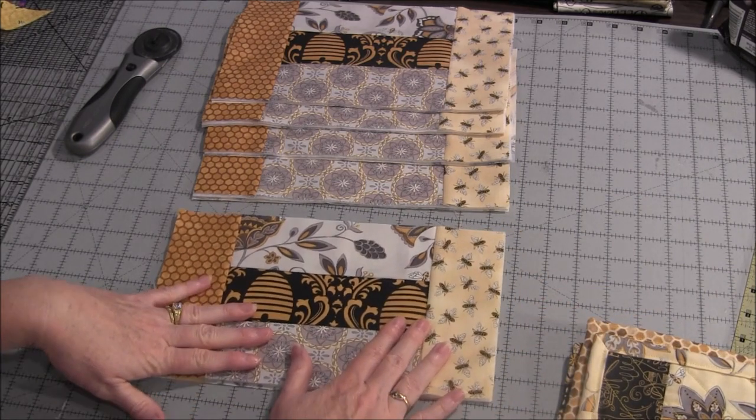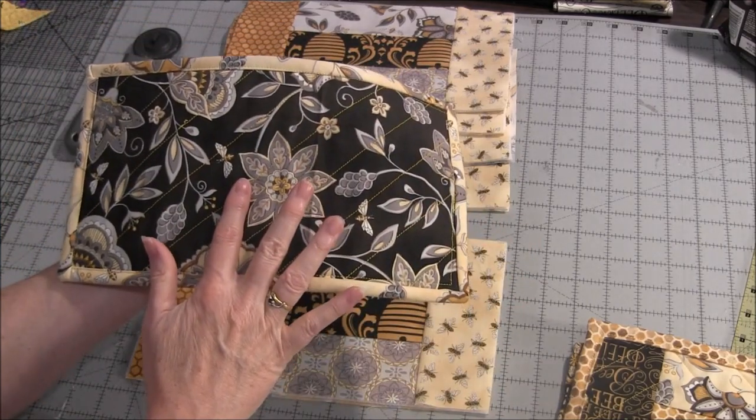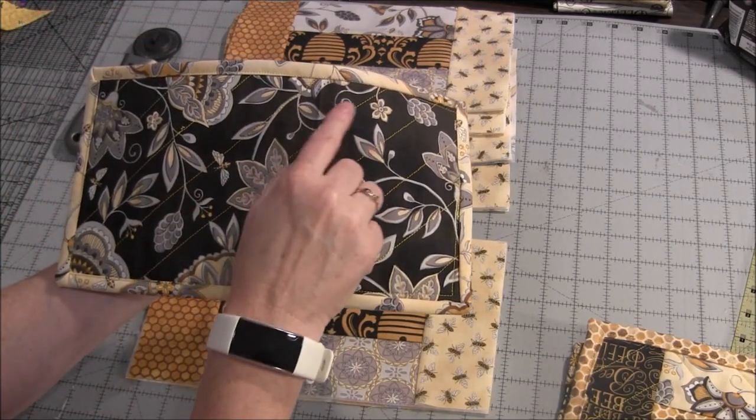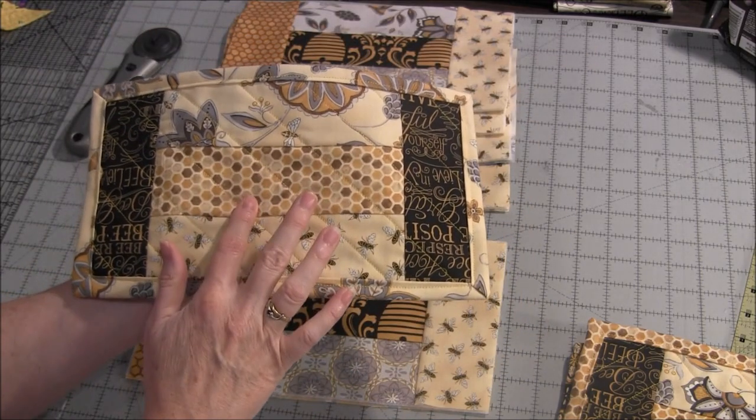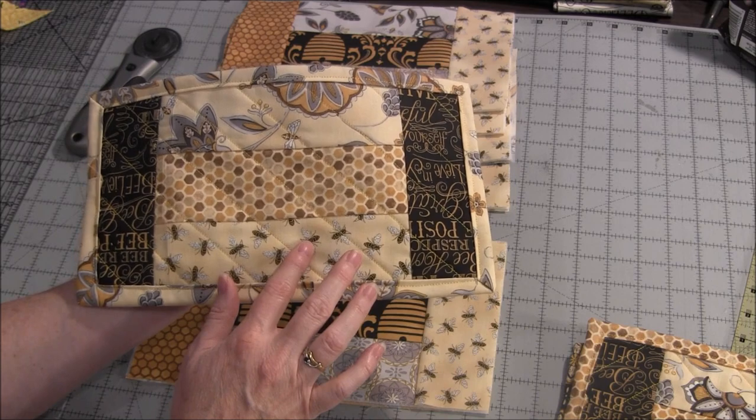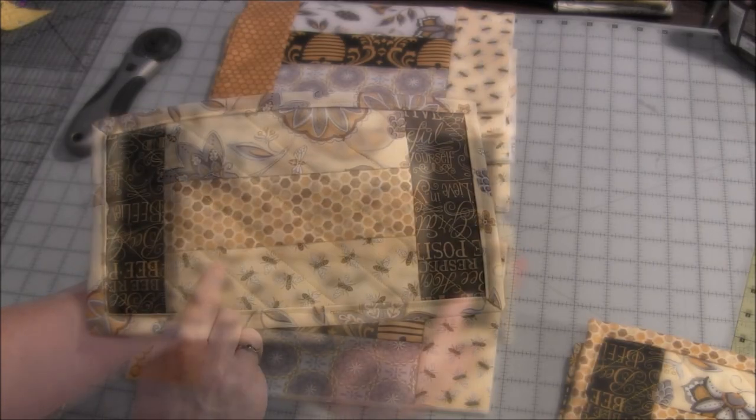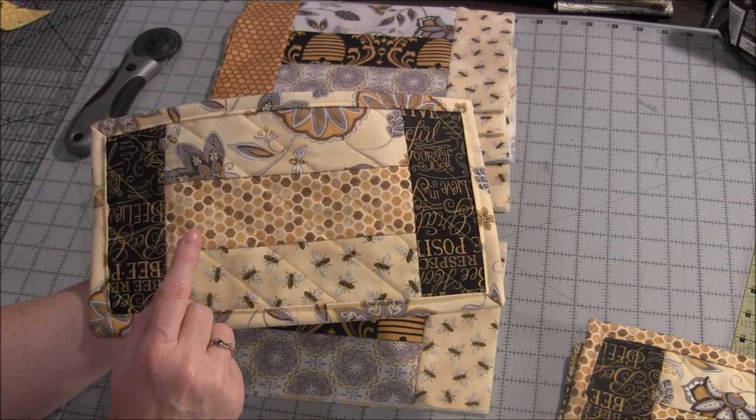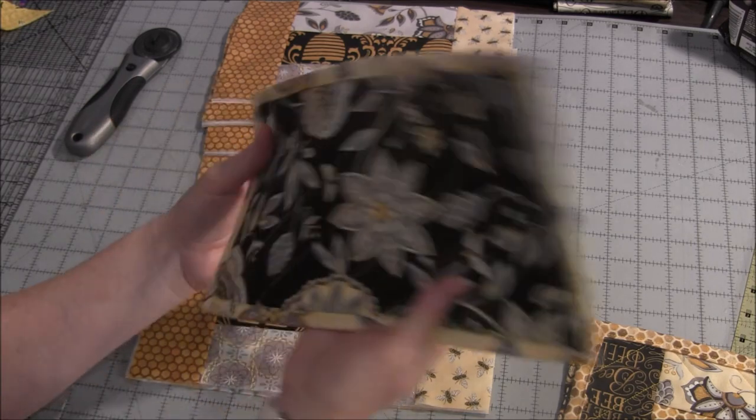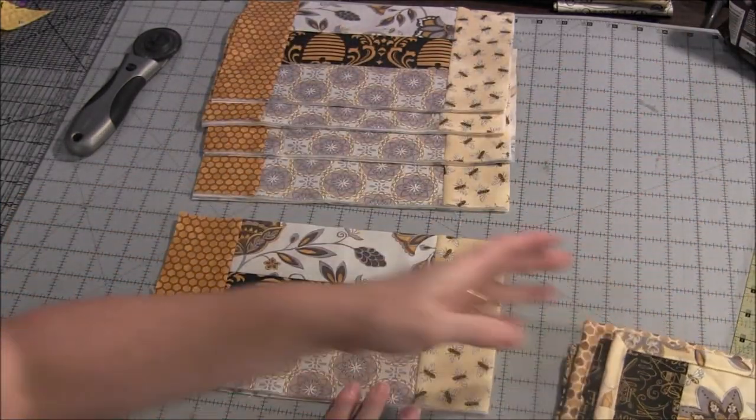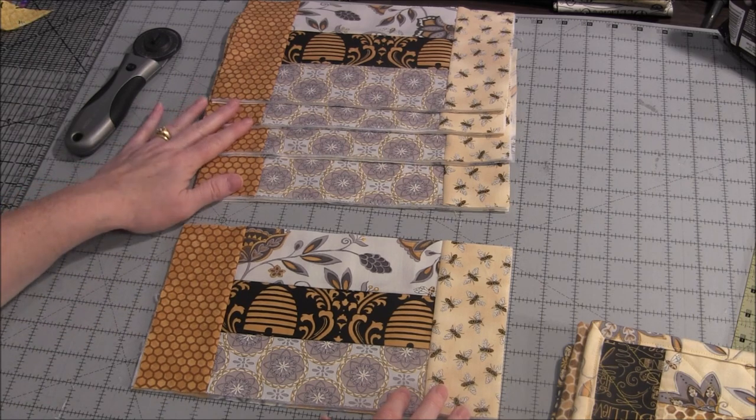For the quilting, you want to make sure in your bobbin that you put a bobbin thread that correlates with your background fabric. And you want a top thread to go with whatever design you have here. I used a variegated yellow thread for my quilting on these, and I will do the same on these. So I will be back after I have these all quilted.